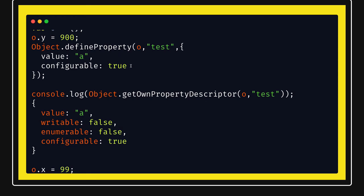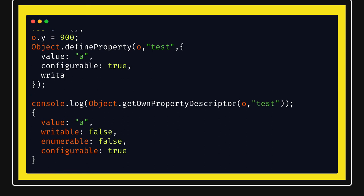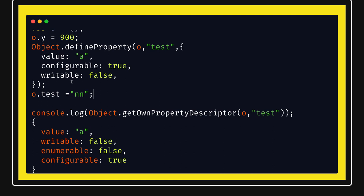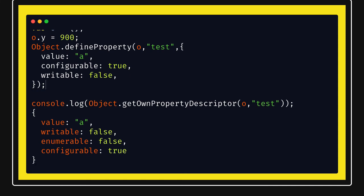If you put writable as false — for example on o.test — then you will not be able to update this property. You will not get an error, but if you try to override it with 'hello', it will not override. You will still have the original value. Similarly, enumerable — if it is true then only the property will be iterated through the for...in loop. The for...in loop only iterates properties where enumerable is true.